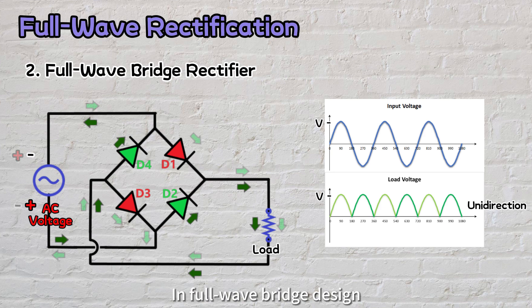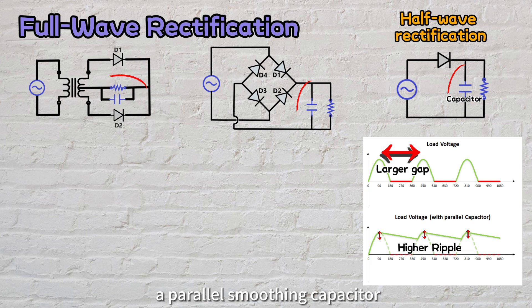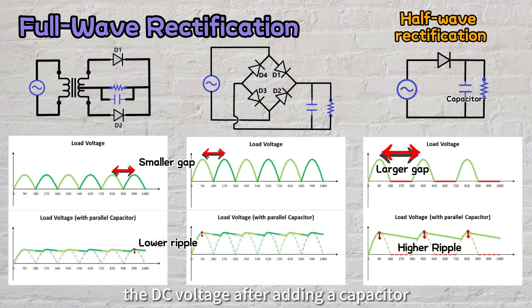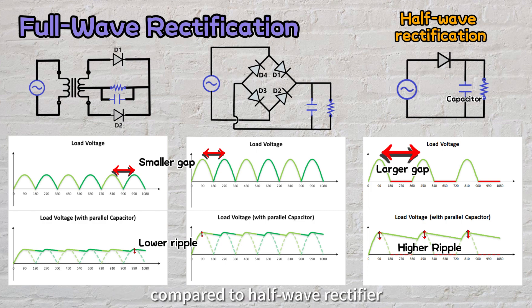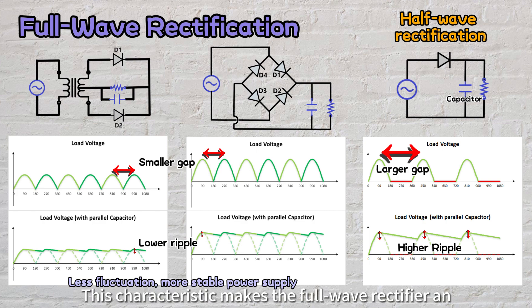Moreover, in full-wave bridge design, the output voltage remains the same. Similar to half-wave rectification, the output of a full-wave rectifier is typically connected to a parallel smoothing capacitor to enhance the rectified output. Now, because of the smaller gaps in the rectified output, the DC voltage after adding a capacitor has a significantly reduced amount of ripple compared to half-wave rectifier. With reduced voltage ripple, fluctuations are minimized, resulting in a more stable and consistent power supply. This characteristic makes the full-wave rectifier an excellent choice for various electronic devices.